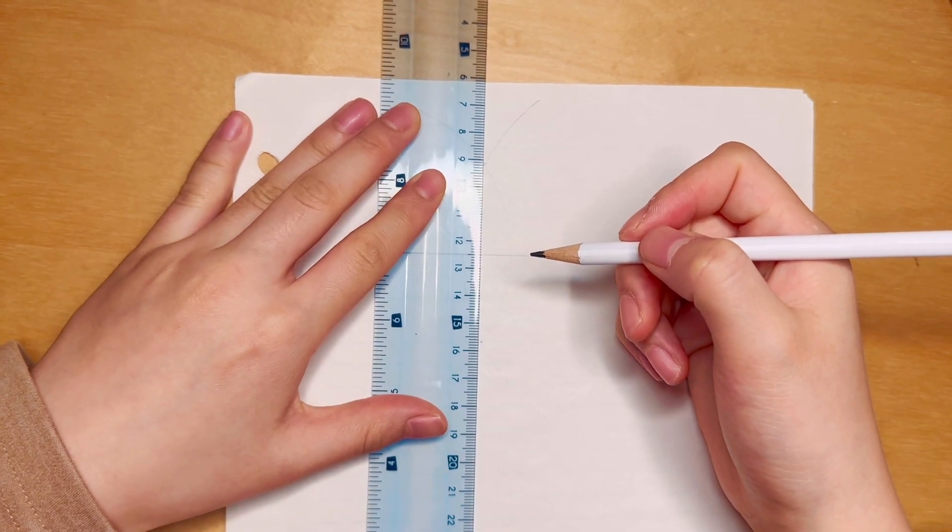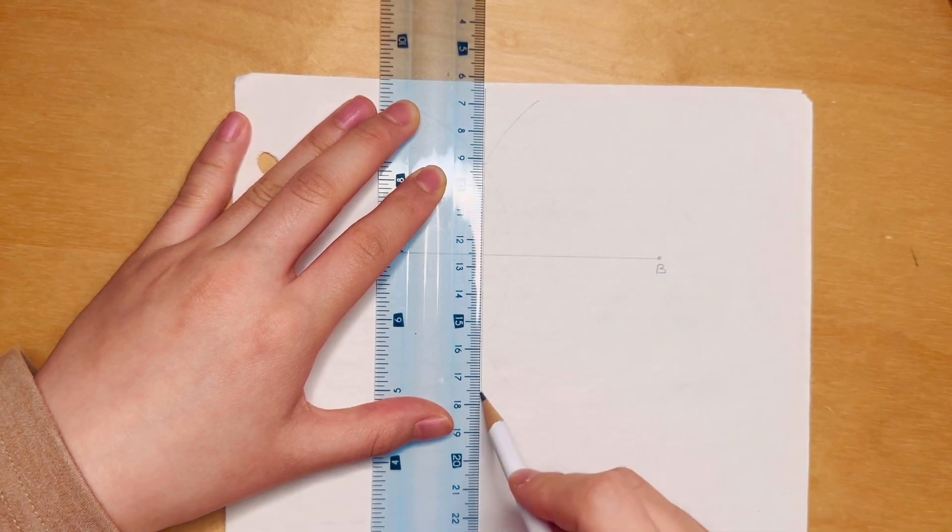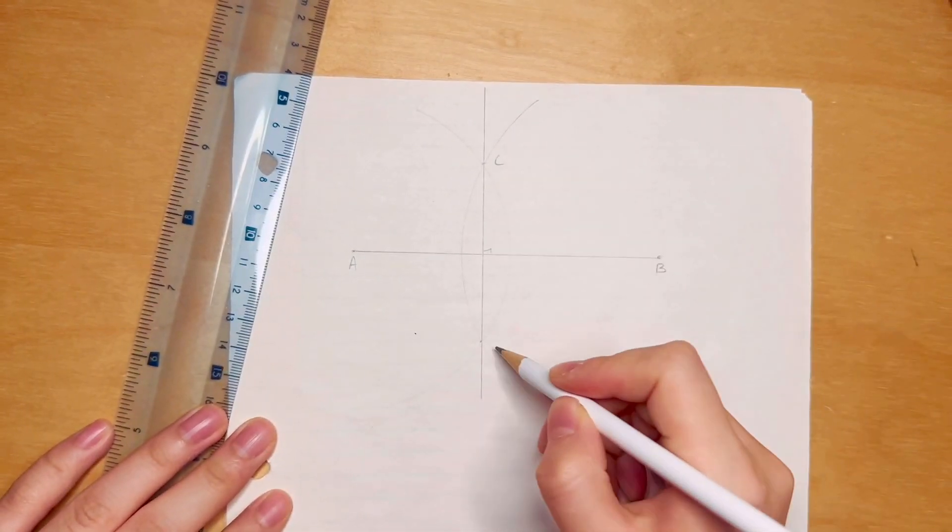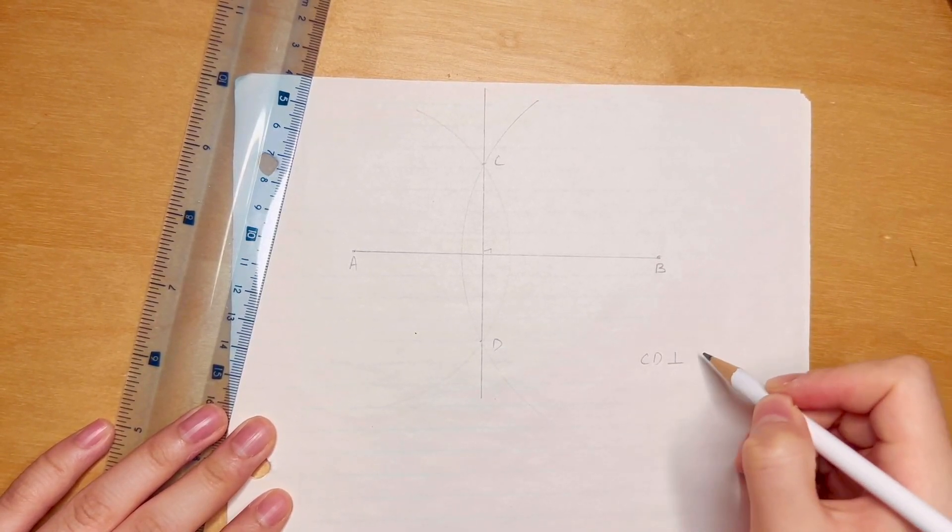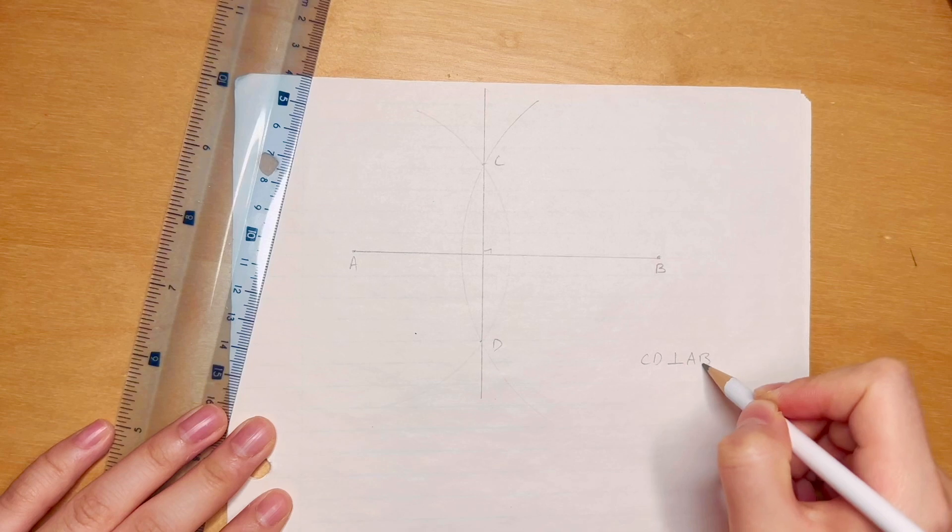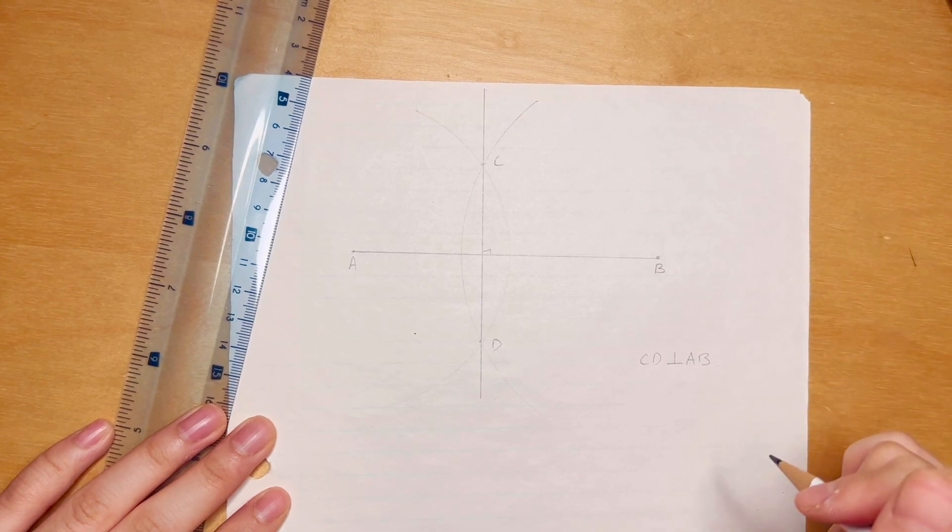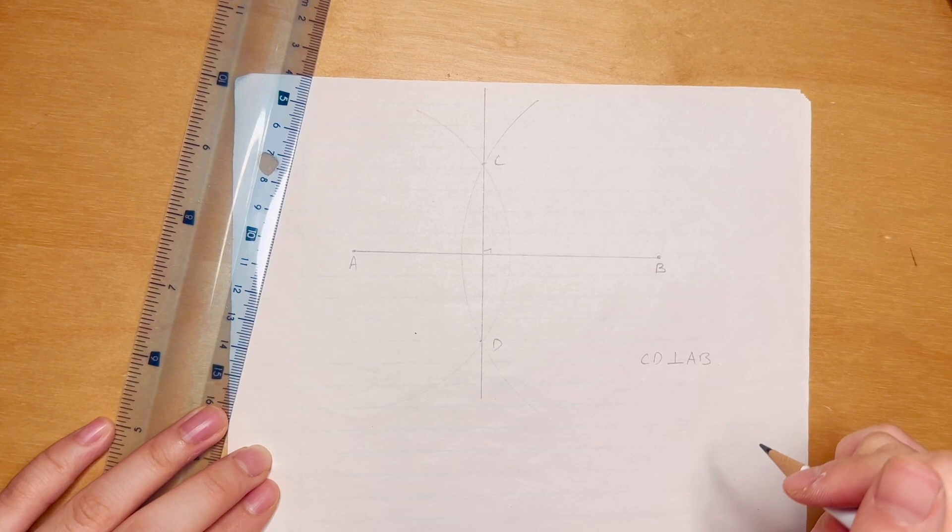Let's call it CD. So CD is perpendicular to AB. Now why that is, I'm going to leave it to you to prove that it is indeed perpendicular. Maybe we'll show it in the next few videos. Now we just drew something that is perpendicular to this line segment AB.